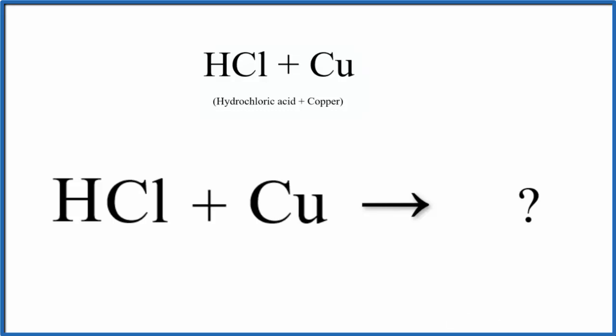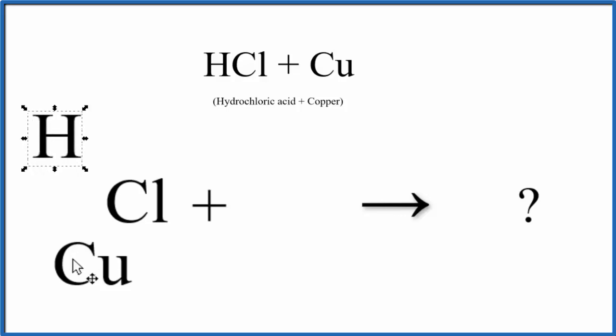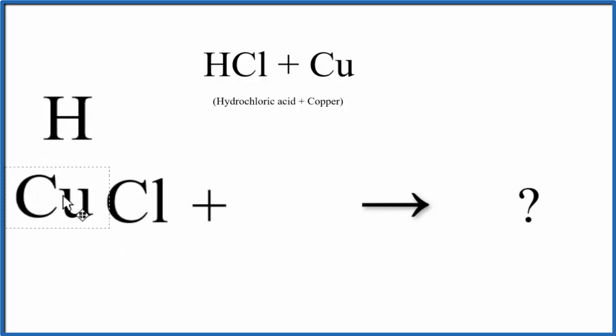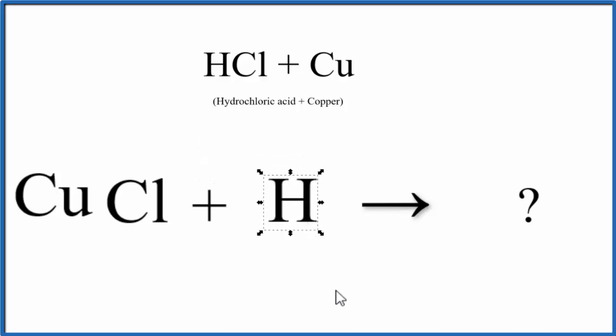It looks like the copper might be able to come in in a single replacement reaction and then push the hydrogen out and bond with the Cl, then the hydrogen would be by itself. That's one possibility.